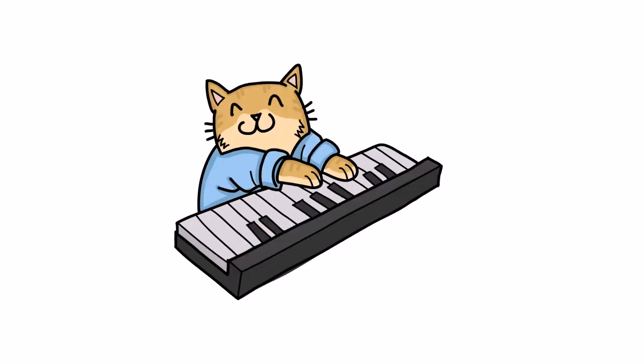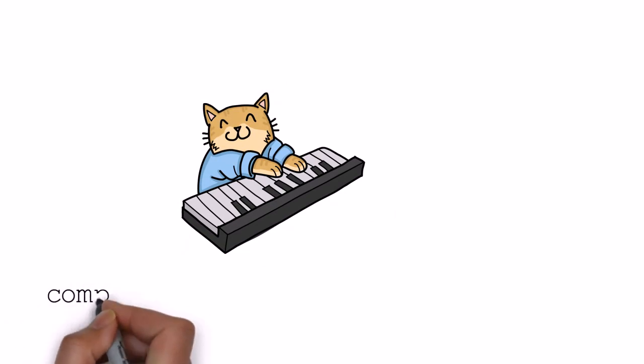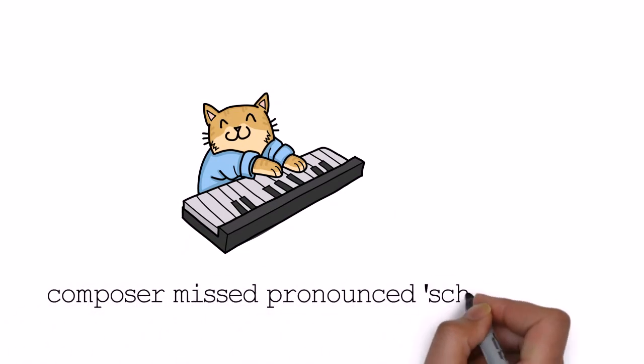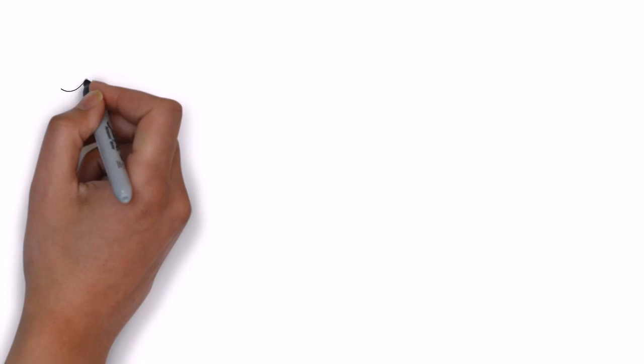First mistake that Japanese speakers can make is with the schwa sound, the 'uh'. So instead of composer, a Japanese person might say composer. Just getting the schwa wrong. Be careful with that one.